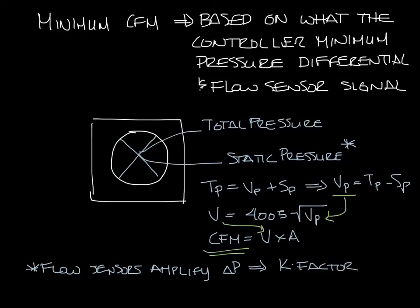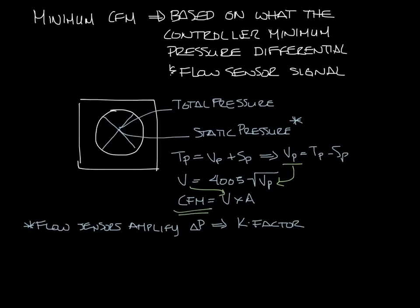That brings us to the flow sensor's K factor. You've probably heard of the K factor. It's something you put in your controller so you know that for a Titus sensor you need to use this K factor. But what that really is is the CFM for that flow sensor where delta P is one inch.